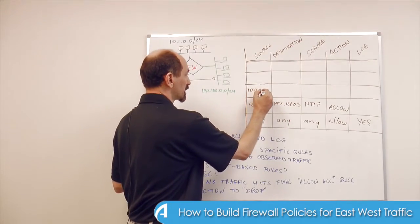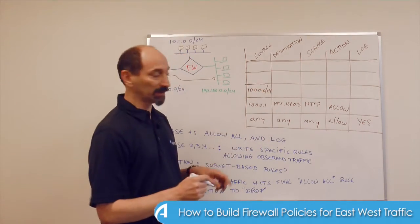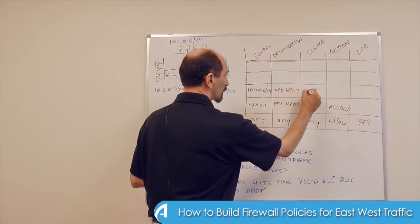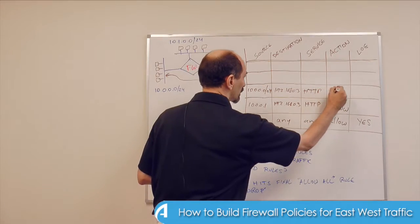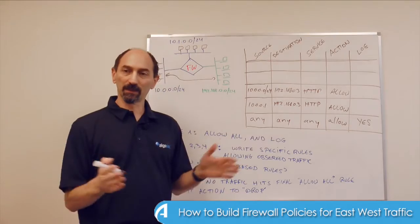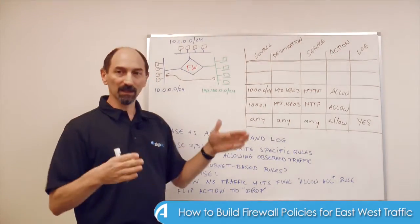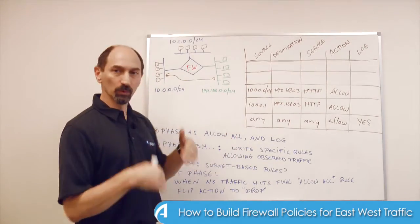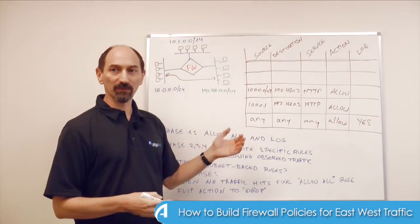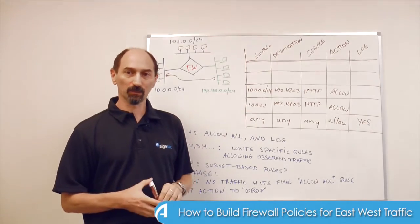You could write something like from 10.0.0.0/24 — the whole subnet — to that same IP address with service HTTP. You can generalize the examples you saw in the log to slightly larger subnets that will future-proof your rules and allow slightly more traffic than you've specifically observed, because you know that there are other pieces that might come into play.